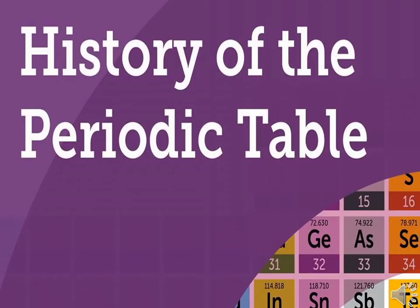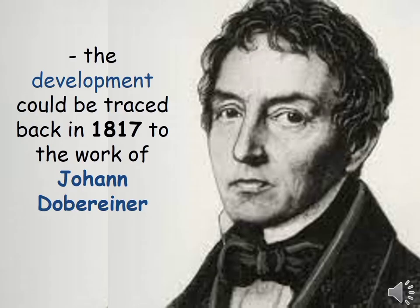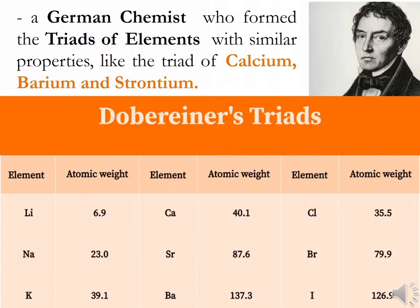Here are some essential details about the development of the periodic table. The development could be traced back in 1817 to the work of Johan Dobereiner, a German chemist who formed the triads of elements with similar properties, like the triad of calcium, barium, and strontium.